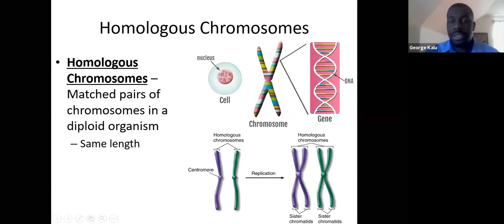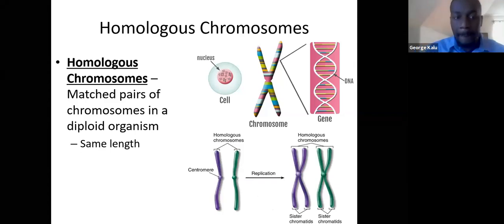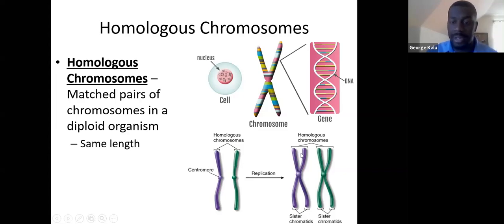Each pair of chromosomes is referred to as homologous chromosomes, arranged in pairs — one from mom and one from dad. Each homologous chromosome is about the same length. Here we see one pair of homologous chromosomes before replication; after they replicate their DNA, we still have one pair of homologous chromosomes.